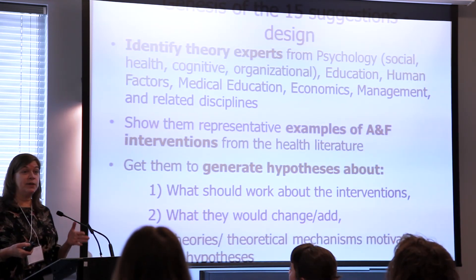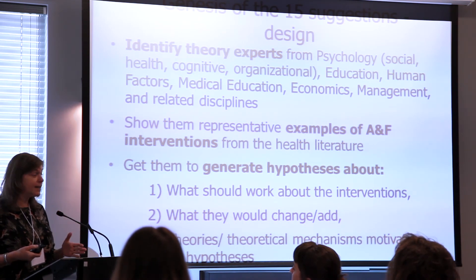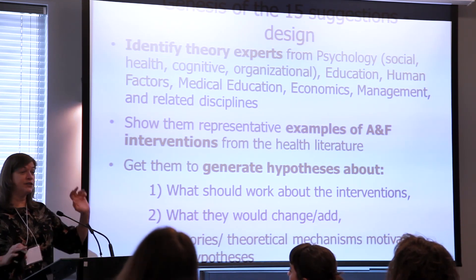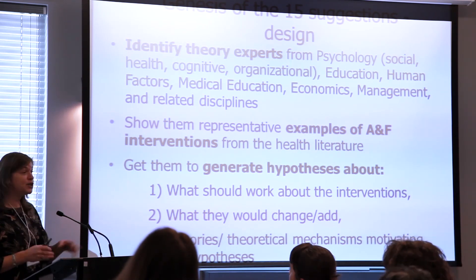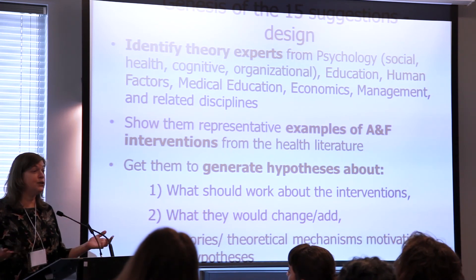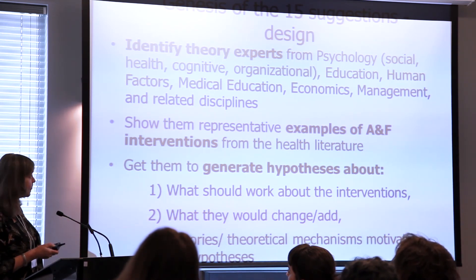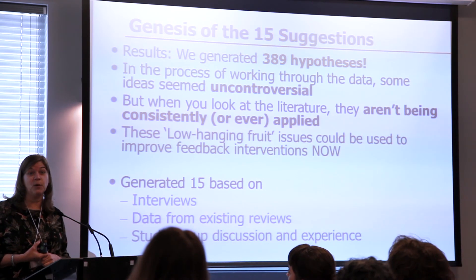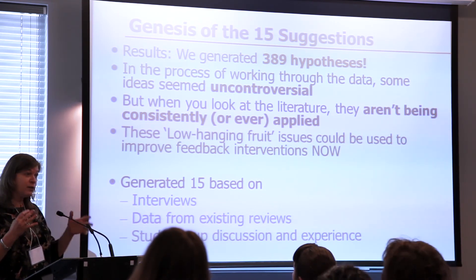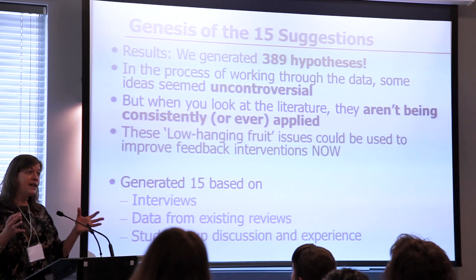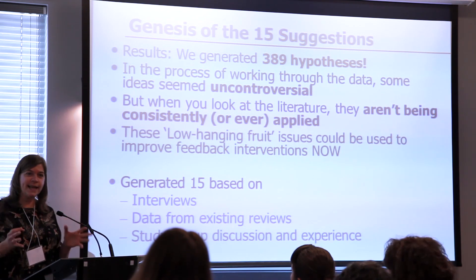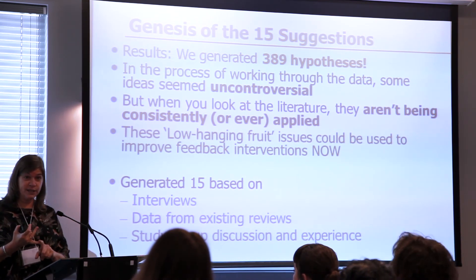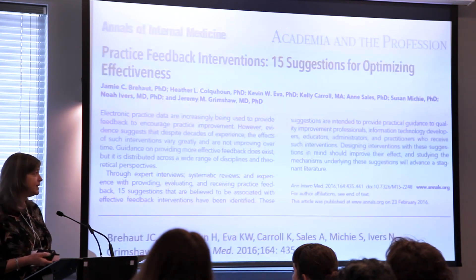Being able to review all of that literature was too massive and we didn't have the expertise on our team to do it. So we thought: what if we interviewed all of these people? We identified theory experts with a lot of expertise in feedback and interviewed close to 30 people from a range of disciplines — economics, management, human factors, medical decision making. We showed them examples of feedback and asked them: what's wrong with this, how would you do it better? We ended up with 389 suggestions — hypotheses for what effective audit and feedback would actually look like. Based on those interviews, the Cochrane review, and our team's expertise, we came up with 15 suggestions.